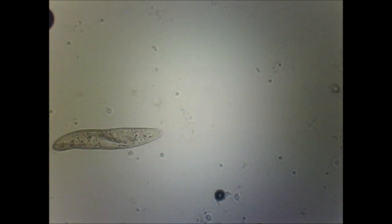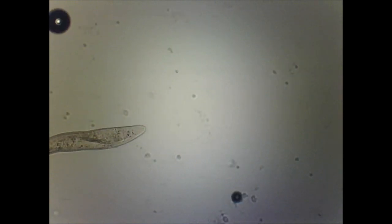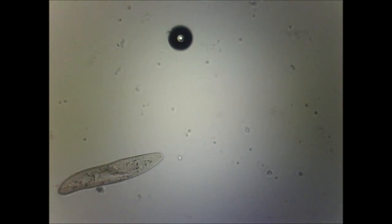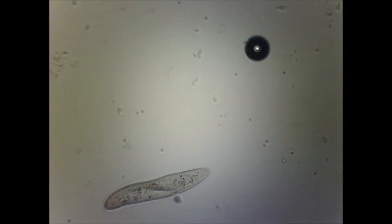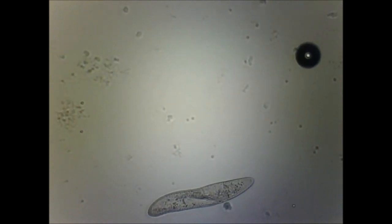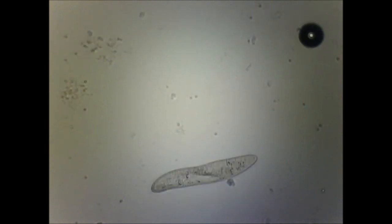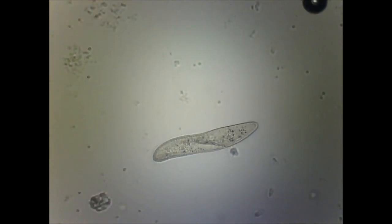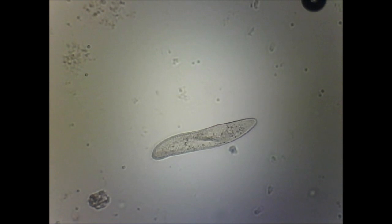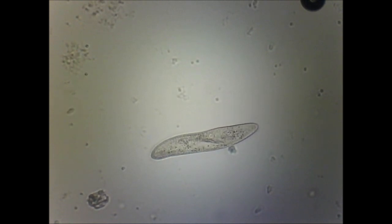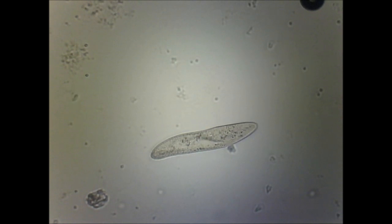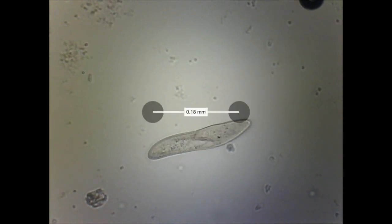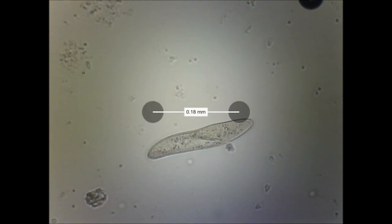Here you see a single paramecium in this methylcellulose, which is kind of gelatinous, so it's harder for it to swim and it slows down. As you look closely you can make out some of the detail inside the cell, even at this medium power magnification. You can see cilia beating on the edges and cytoplasm streaming inside — already a much better view.